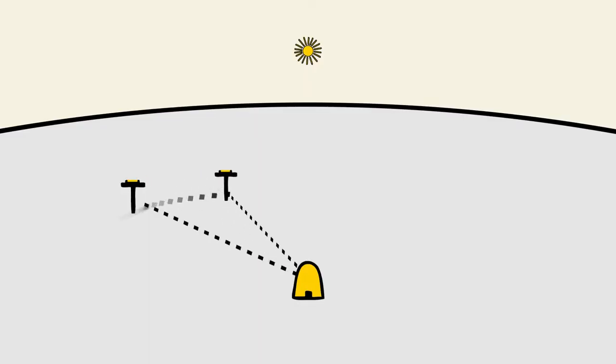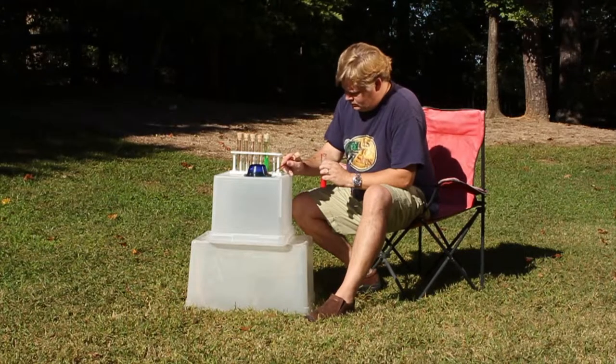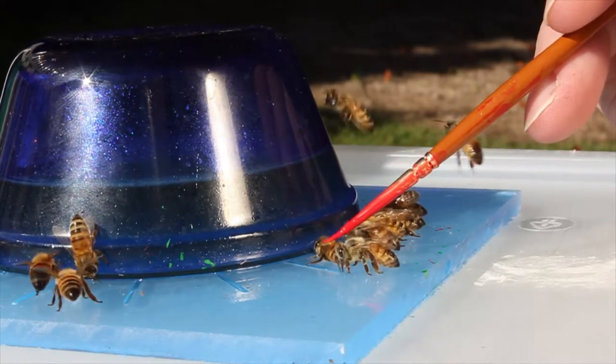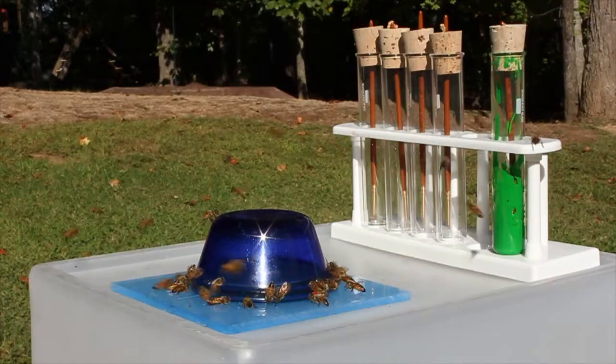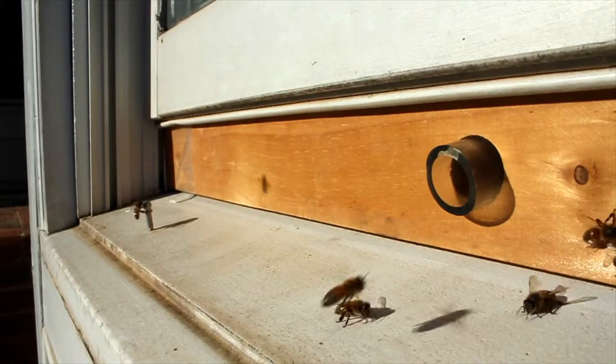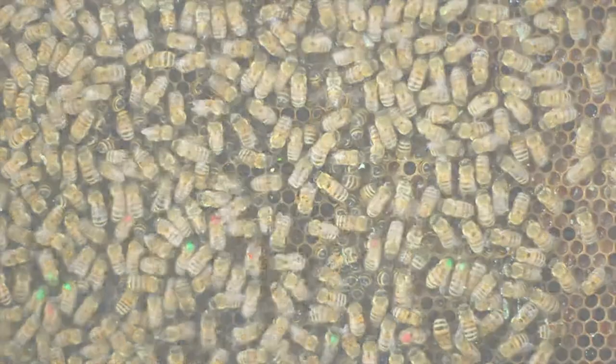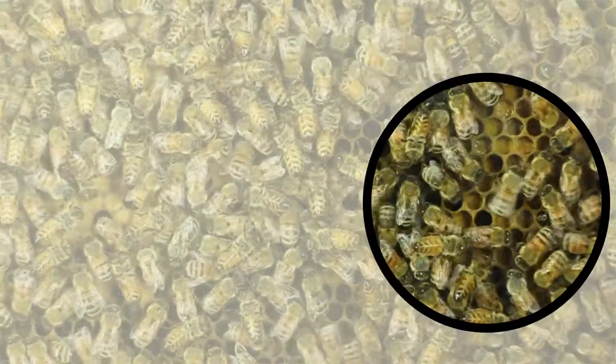Two feeders are placed in different directions away from the hive. At each location, visiting honeybees are marked with a small spot of paint. A separate colour of paint is used at each station. So, when a bee returns to the hive, it can easily be determined which feeding site it visited.